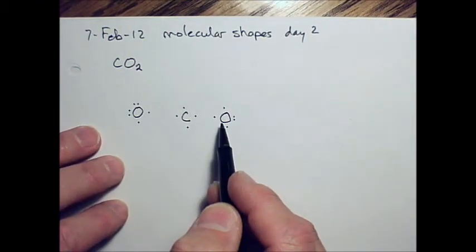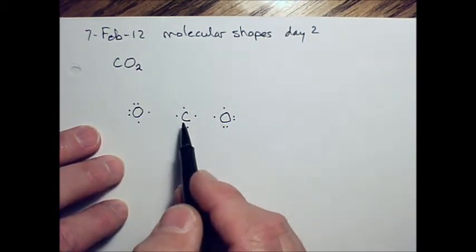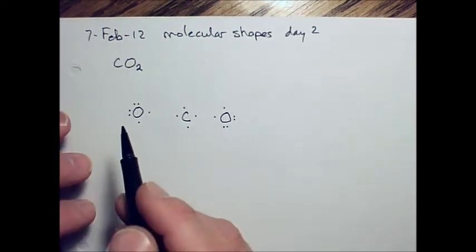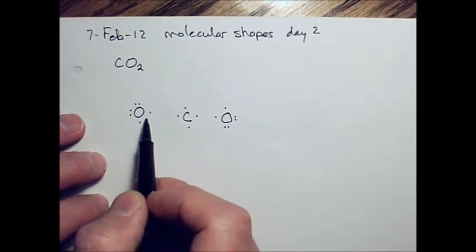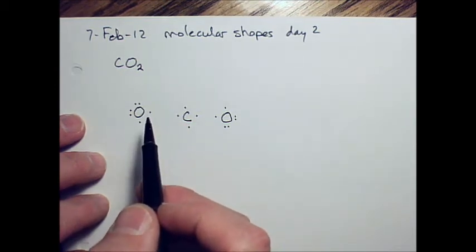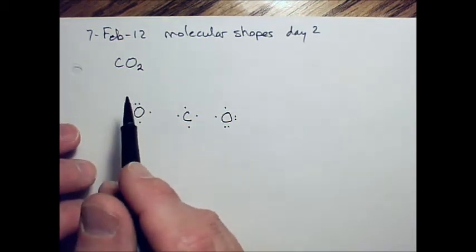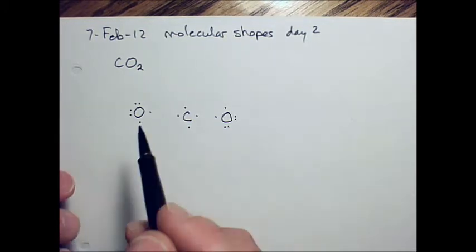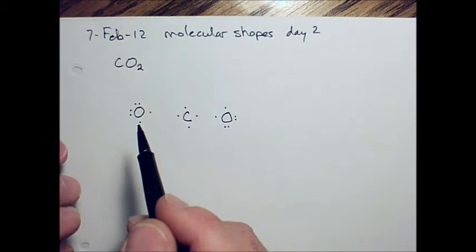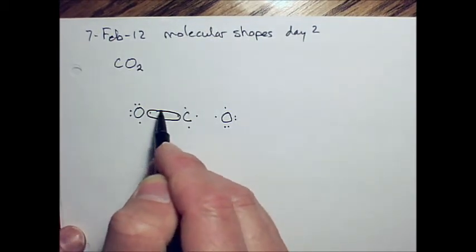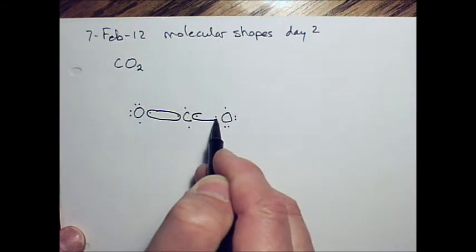I've already written out the electron dot formulas for each of these elements, and we want to share electrons in a way that gives the oxygen and carbon all the electrons it wants to be as stable as it can be, and that would be when it has eight electrons in the valence level. The electron dots only show the electrons in the valence level, so we're going to circle these two dots here to share there and circle these two dots to share these.